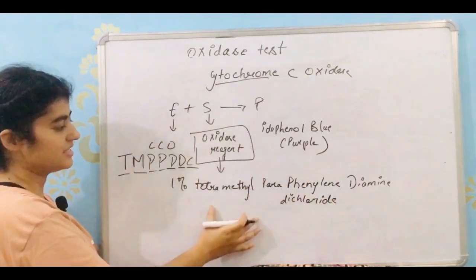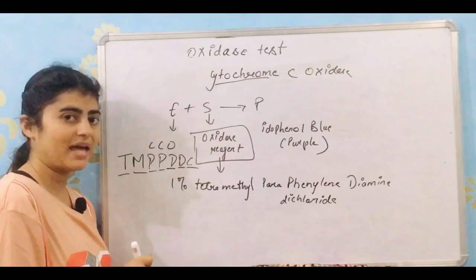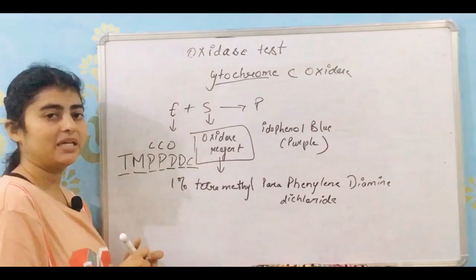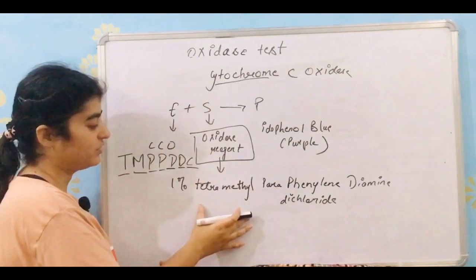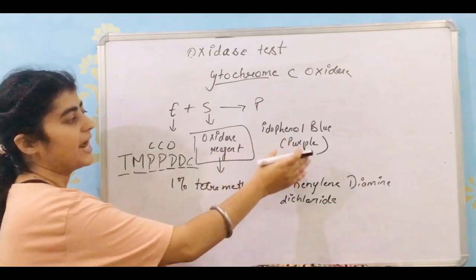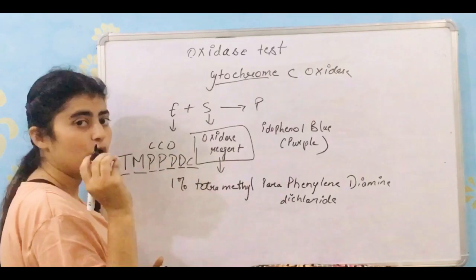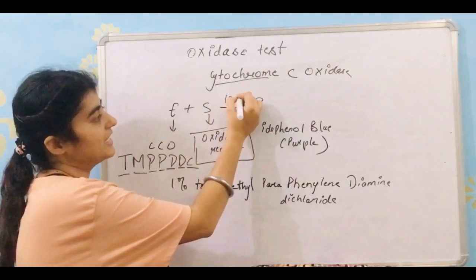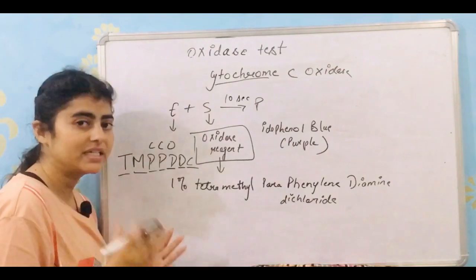So this is oxidase reagent that is 1% tetramethyl paraphenylenediamine dihydrochloride. So this enzyme would react with this tetramethyl paraphenylenediamine dichloride to produce idophenol blue that is purple in color, and this reaction would take place within 10 seconds, means you will get your result within 10 seconds.